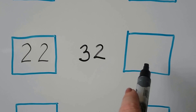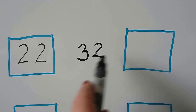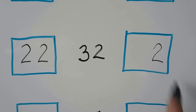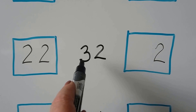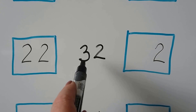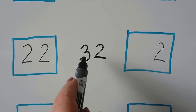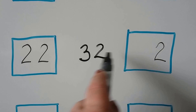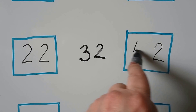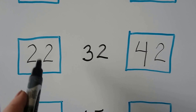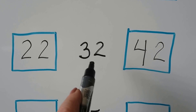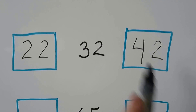10 more: the ones are going to stay the same. We'd add another 10 — we'd have one more than 3, it would be a 4. So we have 22, 32, 42.